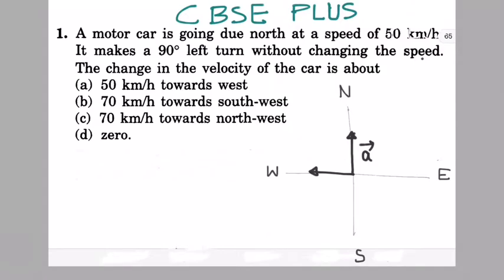A motor car is going due north at a speed of 50 km/h. It makes a 90 degree left turn without changing the speed. The change in the velocity of the car is about, and we have to find the direction.